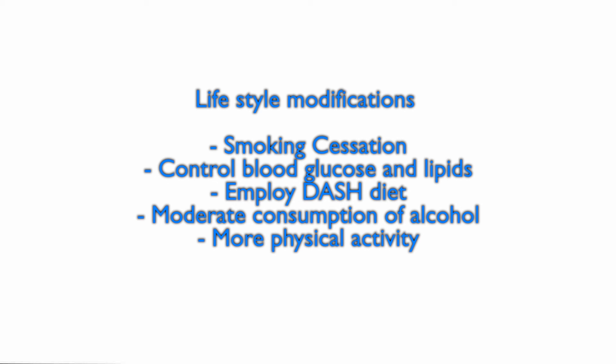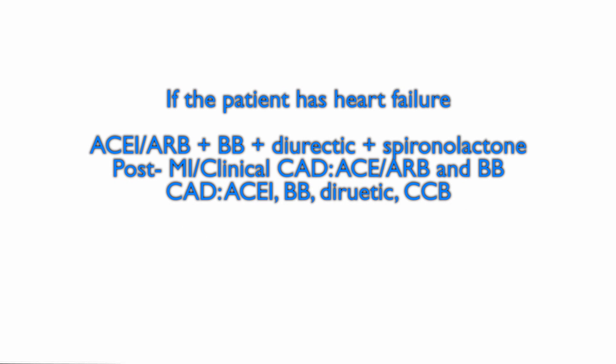Other factors influence medication selection. If the patient has heart failure, start with an ACE inhibitor or ARB, then add a beta blocker, a diuretic, and possibly spironolactone. For post-MI or clinical coronary artery disease, start with an ACE or ARB and a beta blocker. For coronary artery disease, use an ACE inhibitor, beta blocker, diuretic, and calcium channel blocker.